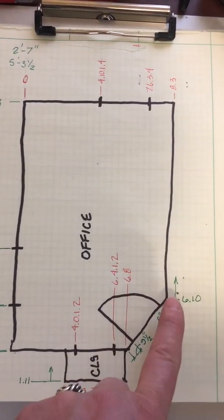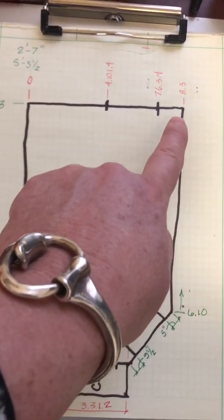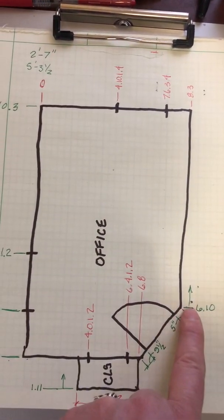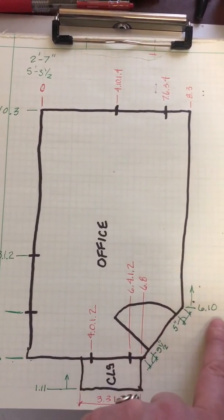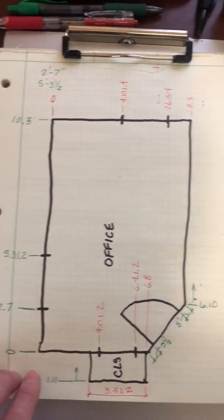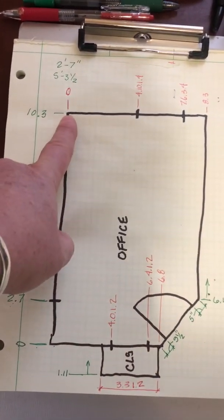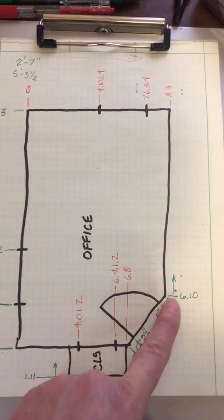So instead I measured this corner here from this wall, and I indicated that on my field measurements by pointing an arrow to show which direction I measured that in. You don't have to do the arrow if you're measuring it from the zero wall that you chose. So here I didn't measure from that zero wall, so I had to put in an arrow.